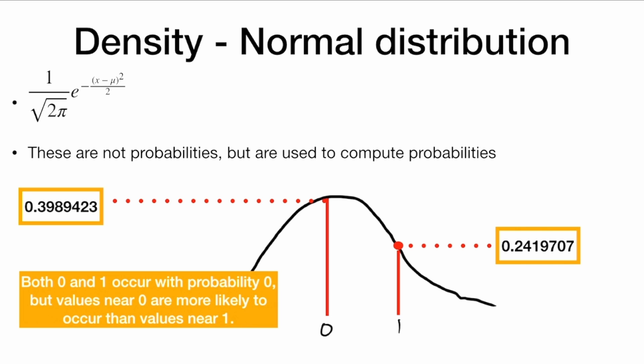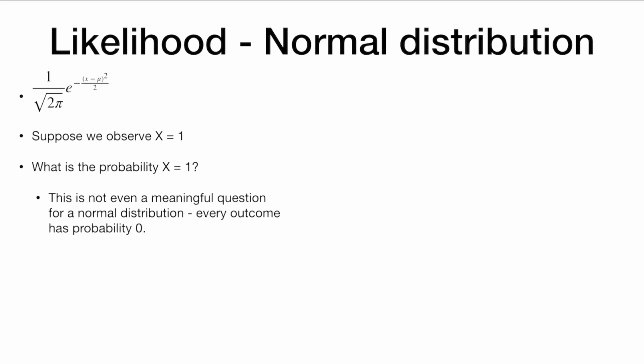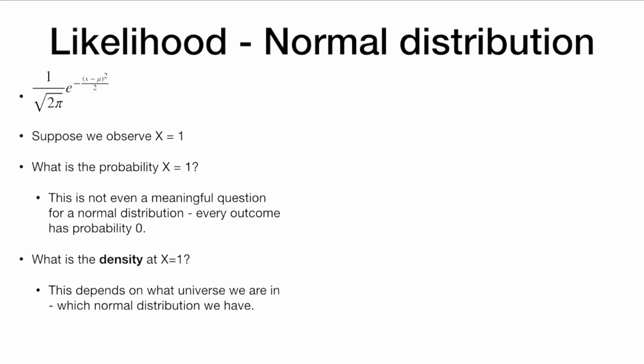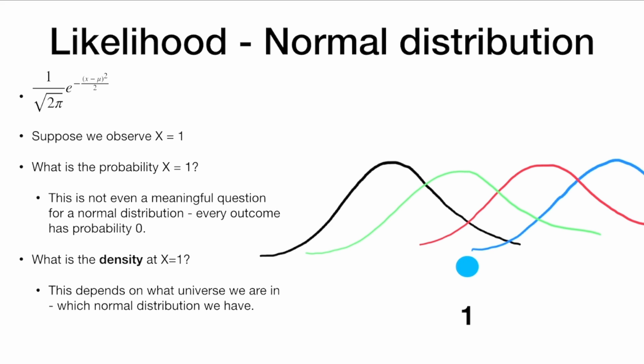Here, the value 0 has a higher likelihood of 0.39. Now both 0 and 1 occur with probability 0 because it's a continuous distribution, but values near 0 are still more likely to occur than values near 1. Now suppose we observe data instead — we observe x equals 1, but we don't know what universe we're in. What is the probability that x equals 1? That's not even a meaningful question for a normal distribution because every outcome has probability 0. What is the density at x equals 1? Again, this depends on what universe we're in and which normal distribution we have. So for a continuous distribution, the relevant question is not what is a likelihood versus a probability — rather, it is a density versus a likelihood. We observe our data point x equals 1 and we ask what is the density at that point. For the green distribution the likelihood is very high. For the red and black distributions the likelihood is in the middle. And for the blue distribution the likelihood is very low.